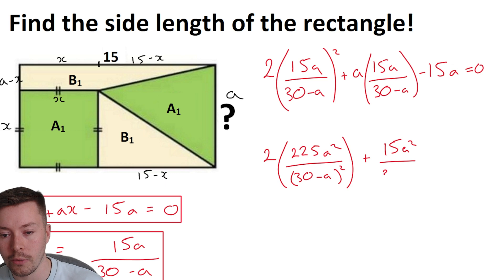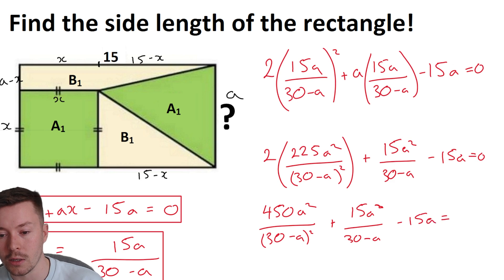So I've got two lots of 15 squared is 225 A squared over 30 minus A squared plus, and then I've got 15A squared over 30 minus A minus 15A is equal to zero. And then I'm going to bring a two into this. So I've got 450 A squared over 30 minus A in brackets squared plus 15A squared, that is squared, over 30 minus A minus 15A is equal to zero. Now at this point, like I said, I wanted to do, I'm going to multiply by that denominator, but I've got to multiply by 30 minus A all squared.